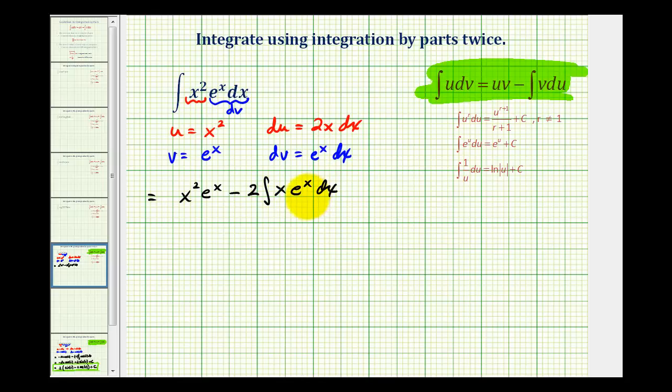So looking at the integral that we formed, the integral of x e to the x dx is simpler than the integral of x squared e to the x dx, because notice how here we had x squared and now we have x. But unfortunately, in order to evaluate this integral, we have to apply integration by parts again.